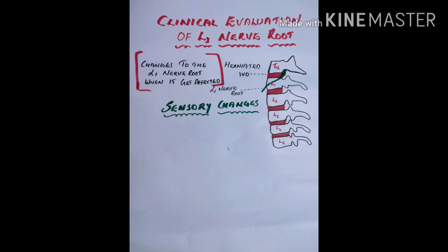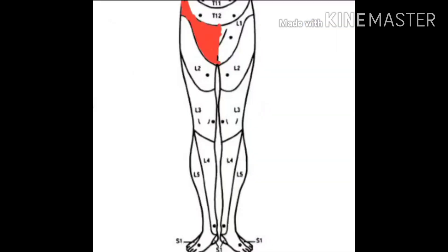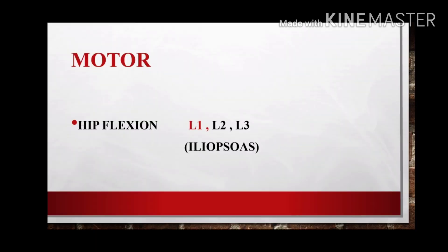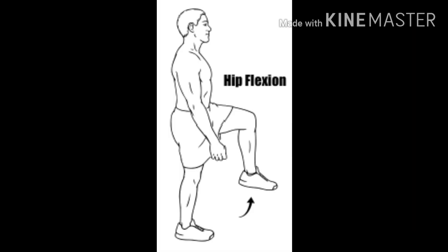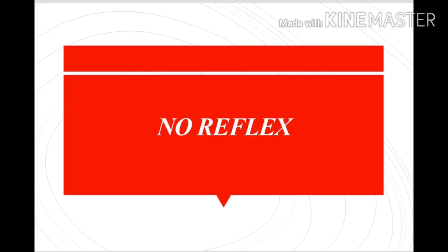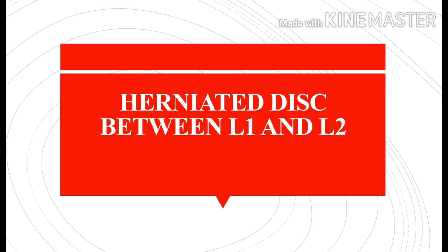First we will check the sensory changes. The sensation of L1 is half the distance between the inguinal ligament and the mid thigh. The motor function of the L1 nerve root is hip flexion done by the iliopsoas. There are no reflexes for the L1 nerve root.